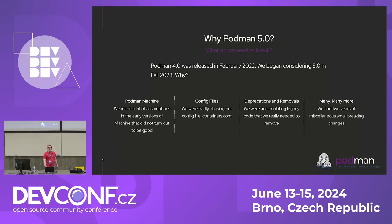Secondly, if we're going to make breaking changes anyway, we realized we were really abusing our config files — more details on that later. Finally, we want to do some big deprecations and removals. We're not quite talking about RHEL 10 yet, but it's on the horizon. And if we have an opportunity to move some code out of the supported space so we don't have to worry about it in 10 years, we'd like to do that. Over two years we've also accumulated a bunch of GitHub issues tagged 'next major version' — things we'd love to do but that require a major version bump.